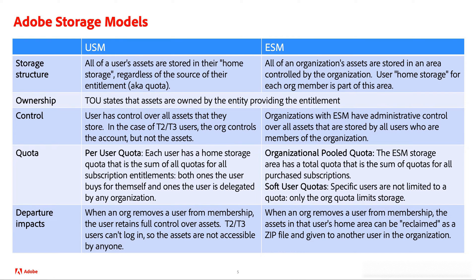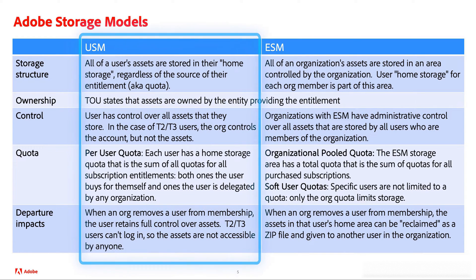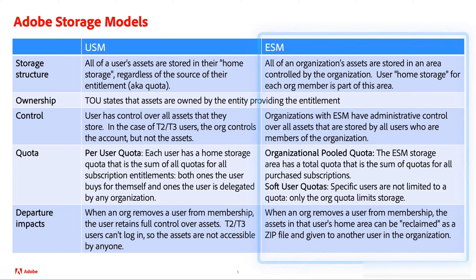Here is a brief summary of the key differences between user storage and enterprise storage models. In a user storage model, all of the user's assets are stored in the user's home storage. Whereas in an enterprise storage model, all of the org assets get stored in an area controlled by the organization, regardless of the user who creates those assets. The home storage for each org member is part of the business directory, and that organizational member is a business ID — an entitlement profile, not a login account.